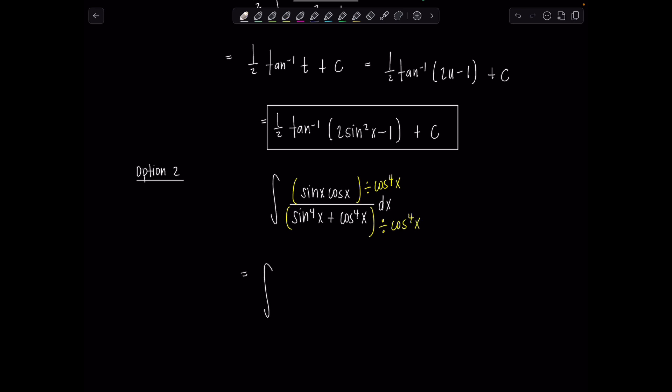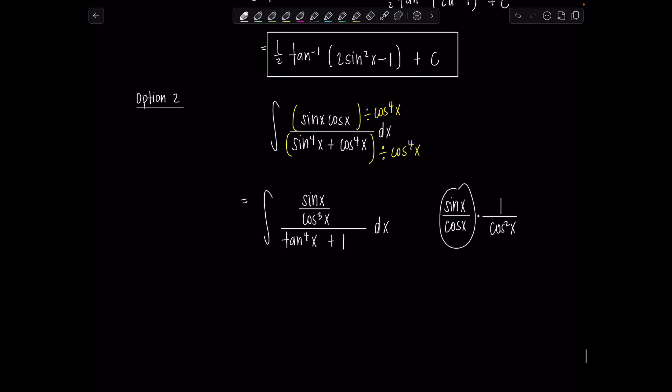So here we go. In the numerator, I'm going to have sine x, that cosine x cancels, so it's over cosine cubed x. And then in the denominator, sine to the fourth divided by cosine to the fourth, that's tangent to the fourth x and then just plus one dx. Now my goal is to have all of the terms be either tangent x's or secant x's. So let's fix that numerator. And notice, if you have sine x over cosine cubed, I can break it up so that I have one cosine underneath the sine and then the other two underneath the one on their own.